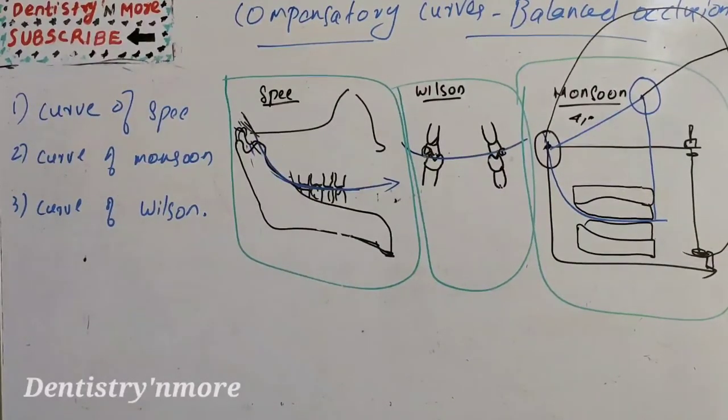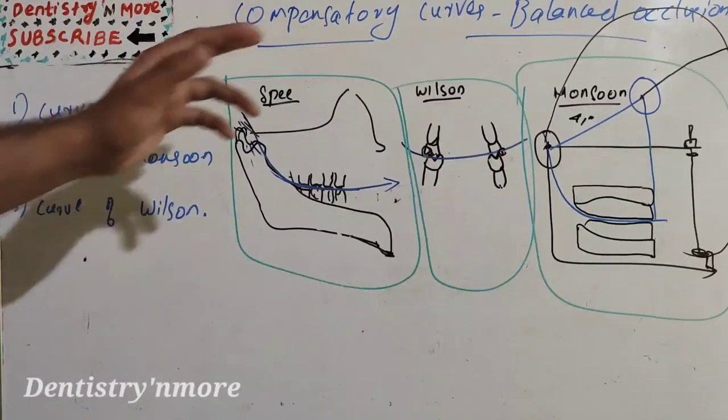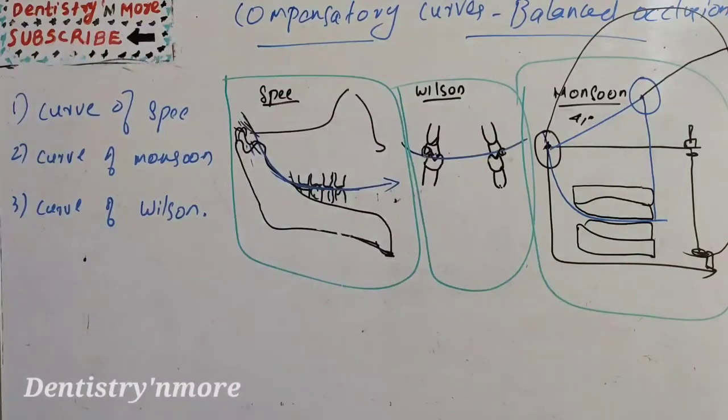So we need to put all these compensatory curve concepts when arranging the artificial teeth so as to achieve the balanced occlusion. So we understood the concept of compensatory curves. I'll come up with a new topic in prosthodontics next. Thank you.